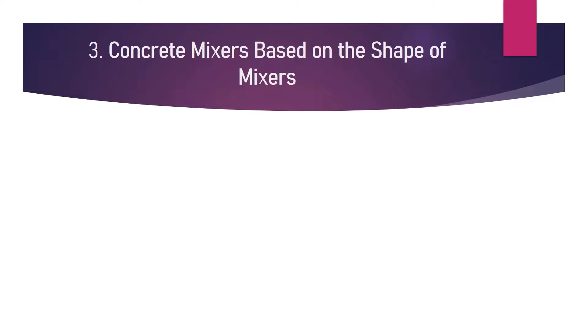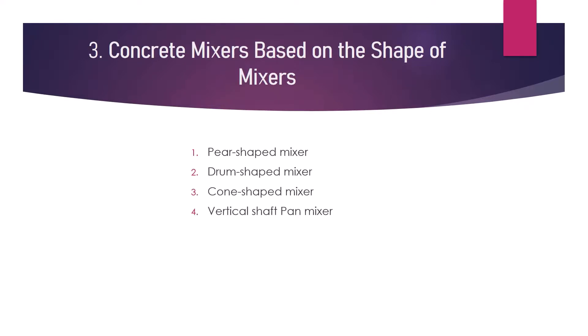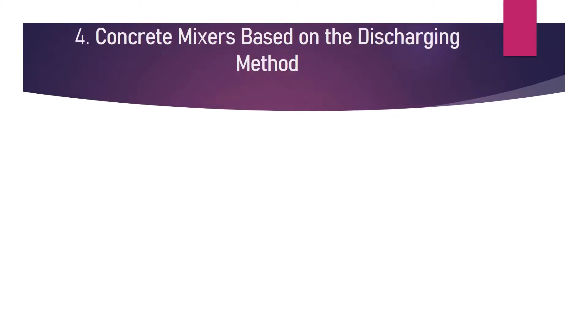Number three: concrete mixtures based on the shape of the mixtures. Based on the shape of the mixture drum used for the machine, concrete mixtures can be a pure shape mixture, a drum shape mixture, corn shape mixture, vertical shaft pan mixture, or a horizontal shaft mixture.